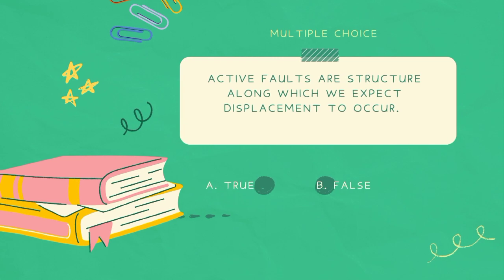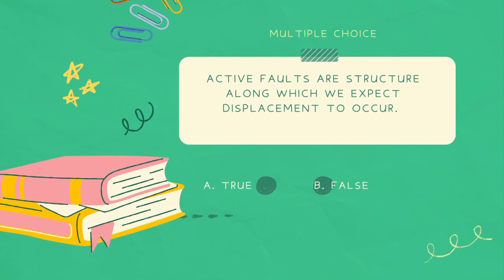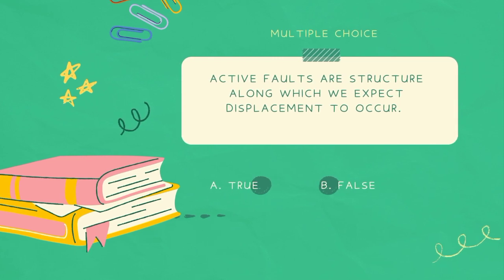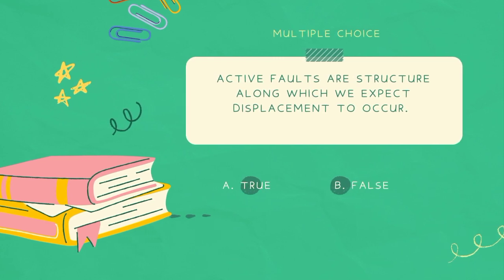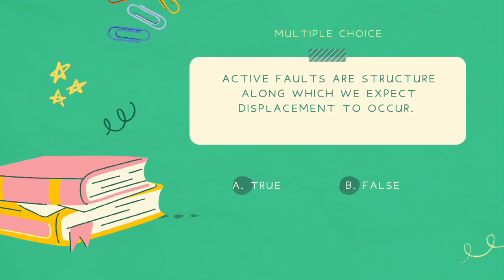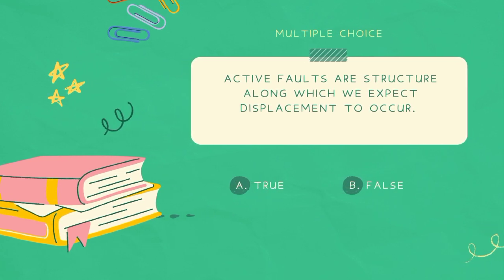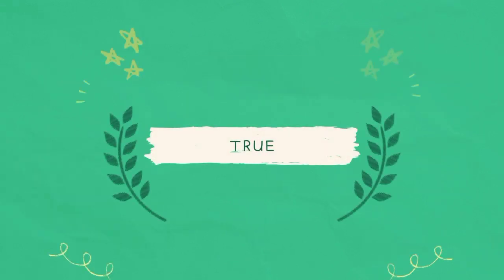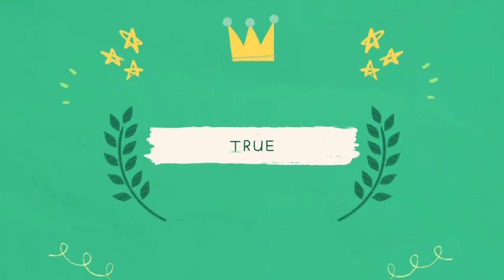Statement: Active faults are structures along which we expect displacement to occur. The answer is true.